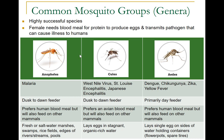Anopheles is responsible for malaria. Culex, as mentioned earlier, transmits West Nile virus, St. Louis encephalitis, and Japanese encephalitis. The Aedes mosquito is responsible for dengue, chikungunya, Zika, and yellow fever.